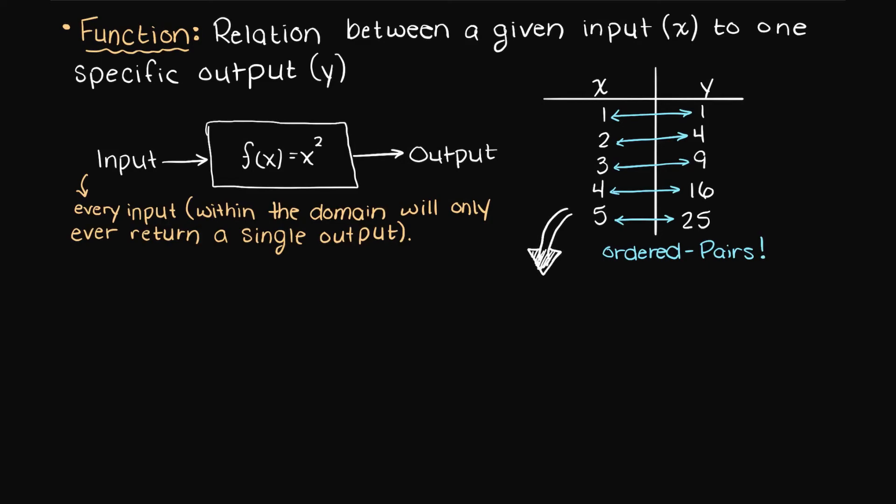As we can see here, we know x squared is a function, as every input, no matter what we enter, will only ever give a single answer. We can also represent the function graphically using the ordered pairs, which is easy to do once our table of input and output values is created.